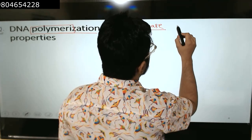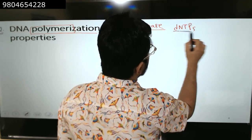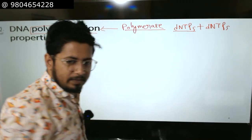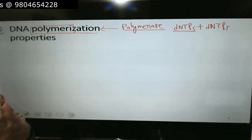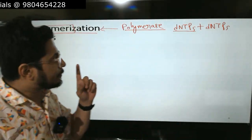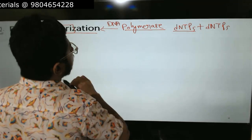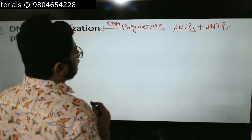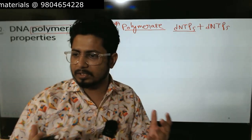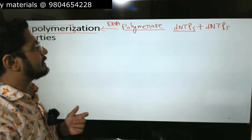DNA polymerization basically means we have dNTPs that are joined together to make a polymer of dNTPs, and that polymer is known as DNA. So the polymer of dNTPs is DNA. For this process of polymerization, the DNA polymerase involved is a multi-module, multiple-structure-containing enzyme — we'll see that in a moment.